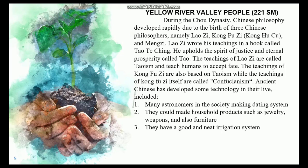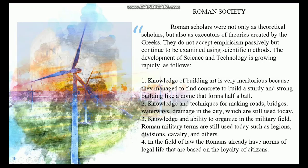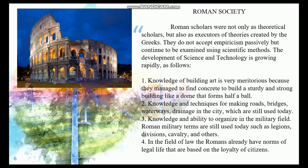Ancient Chinese also developed some technology in their daily life. Roman society: Roman scholars were not only theoretical scholars but also executors of theories created by the Greeks. They did not accept empiricism passively but continued to examine it using scientific methods. The development of science and technology grew rapidly, including: 1. Knowledge of building art — they managed to find concrete to build sturdy and strong structures like a dome that forms half a ball. 2. Knowledge and techniques for making roads, bridges, waterways, and drainage systems in the city, which are still used today.